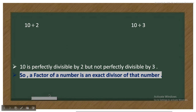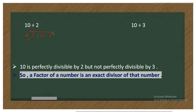We will understand 'perfectly divisible' with the following examples. When we divide 10 by 2, two fives are ten and it leaves zero as a remainder. But when we divide by 3, three threes are nine and it leaves one as a remainder. So when 10 is divided by 2 it leaves remainder zero — it is perfectly divisible. But dividing by 3 leaves one as a remainder, so it is not perfectly divisible.